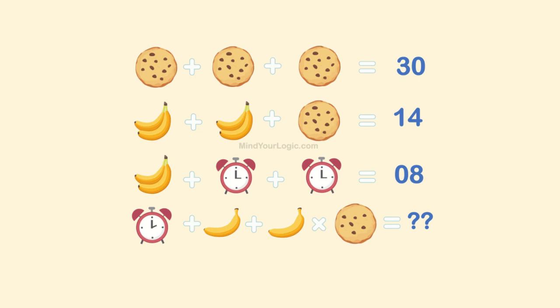Here is the math puzzle, in which cookies, an alarm clock and bananas are given in the equation form. Solve the equation and find the individual value of them, which helps you to decode the final equation.